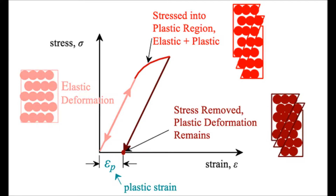Following on from yesterday's video, we are going to go through what an elastic stretch and what a plastic stretch are. An elastic stretch is when deformation is elastic — the material will return to its original shape once the forces are removed, so it has no permanent extension. For example, a rubber band.